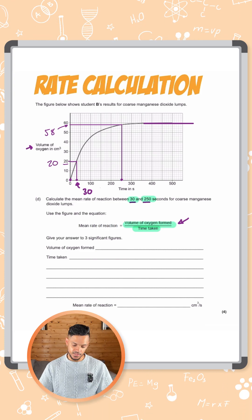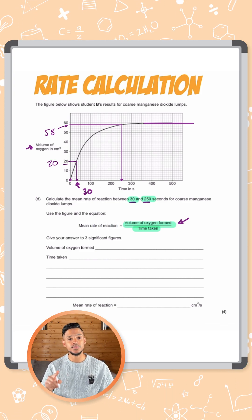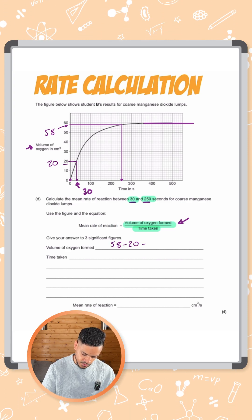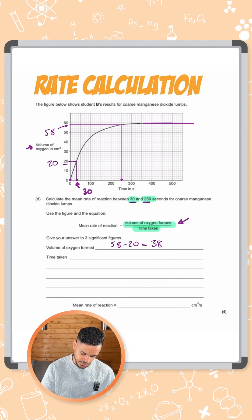So what we want is the volume of oxygen formed. So that's the difference between the 58 and the 20. So 58 minus 20 gives you 38 centimeters cubed.